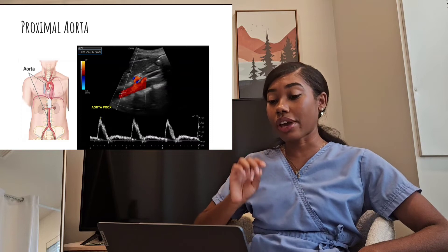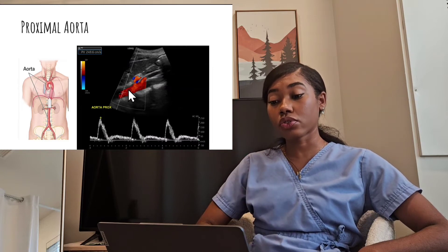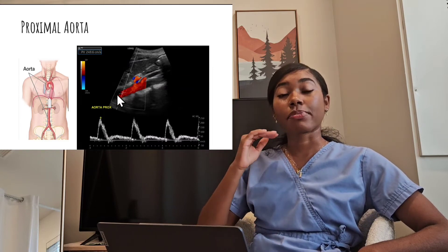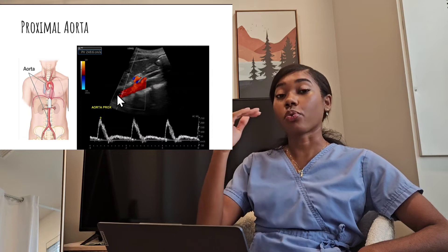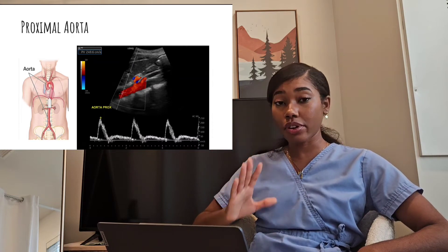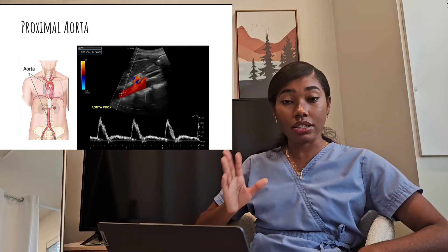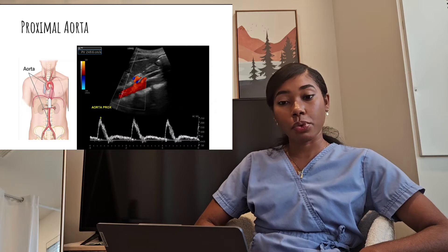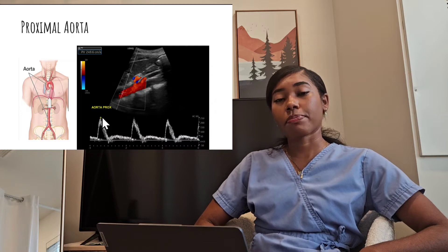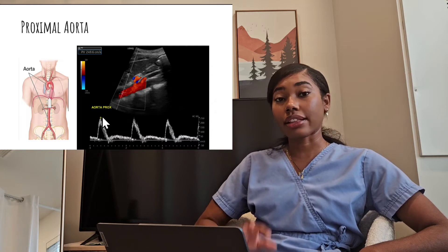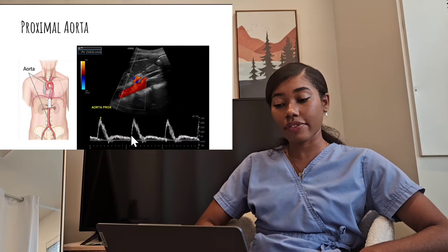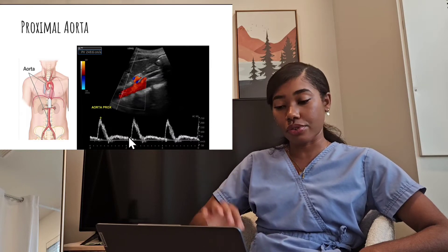You want to make sure that your angle is correct and that the angle is parallel to the walls of the vessel, as parallel as you can possibly get it. You want to measure the spectro-Doppler waveform with the peak velocity at the highest velocity. You can also measure the end-diastolic velocity if you like, just before the upstroke.